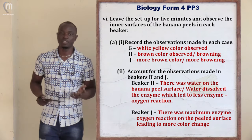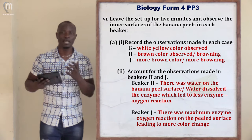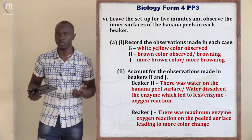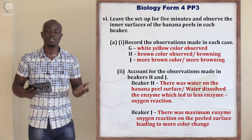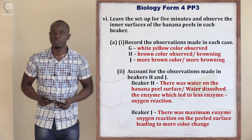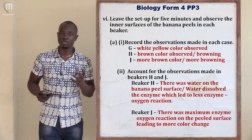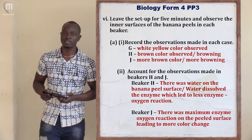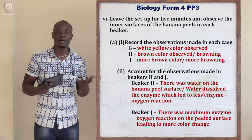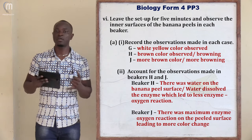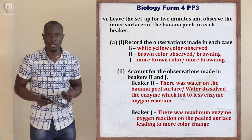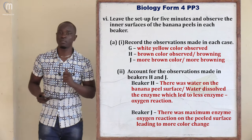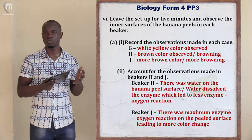For beaker H (containing distilled water), there was some slight brown coloration or browning of the peels. For beaker J (which was empty), more browning of the peels was observed. So to summarize: in hydrochloric acid the peels turned yellow/white; in distilled water there was slight browning; and in the empty beaker there was more browning of the peels.